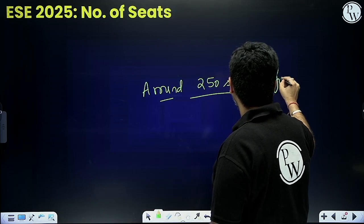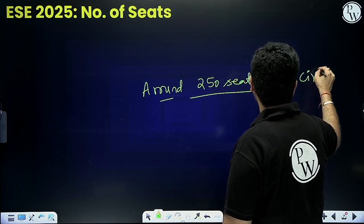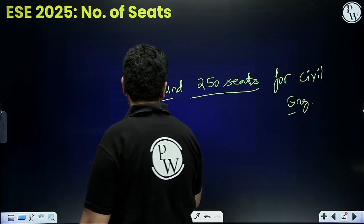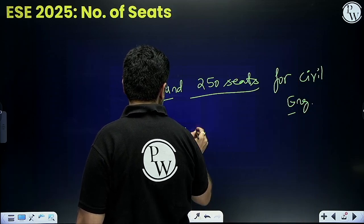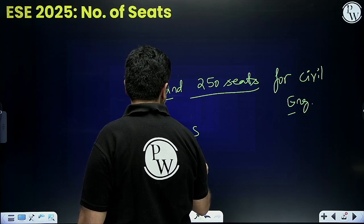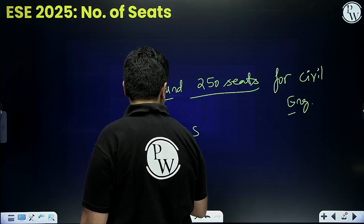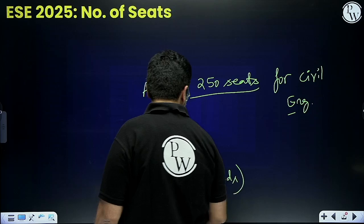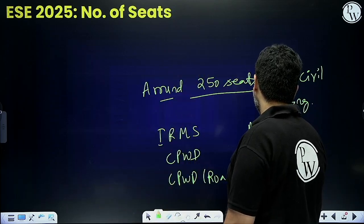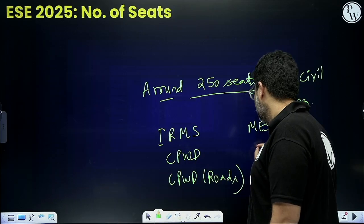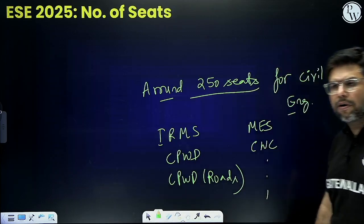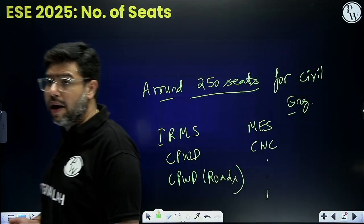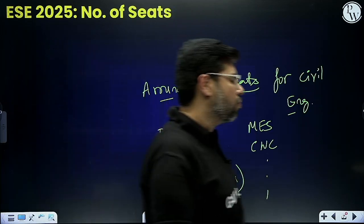Around 250 seats will be there in civil engineering this year. Many important departments are available — IRMS, CPWD, roads, MES, surveyor, CWC and many more. You will get recruited as a Group A officer after clearing ESE 2025.